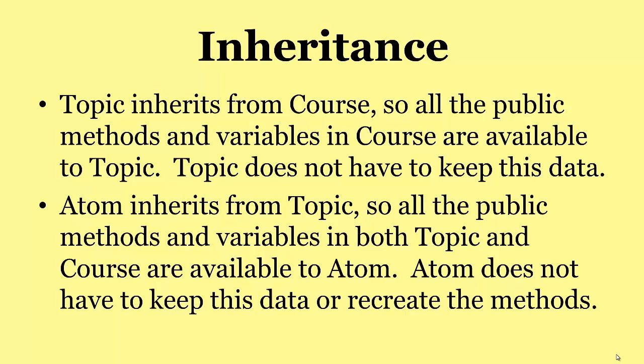So let's move on to inheritance generally. Topic inherits from course. So all the public methods and variables in course are available to topic. Topic doesn't have to keep this data. It doesn't have to keep the methods. It doesn't have to recreate them. Topic has them automatically. Similarly, atom inherits from topic. So all the public methods and variables in both topic and course are available to atom. And atom doesn't have to keep this data or recreate these methods. They're all there automatically. But surely this is very clever programming, isn't it?